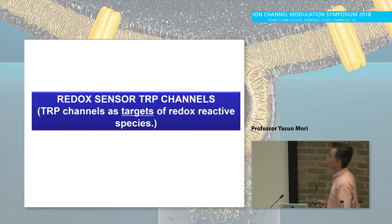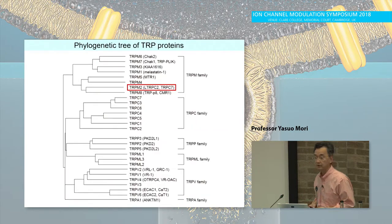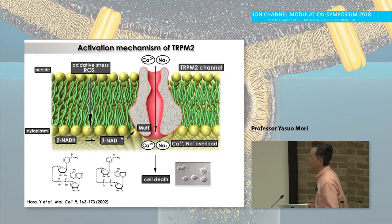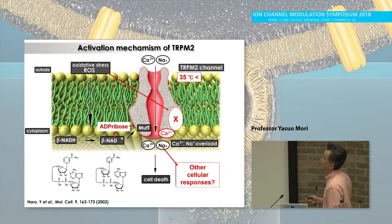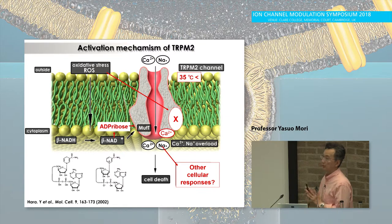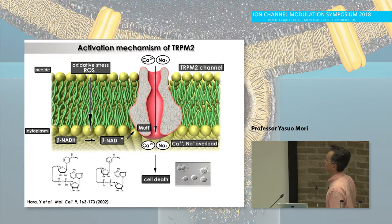How about redox sensitivity of TRP channels? Can TRP channels function as targets of redox-reactive species? The answer is yes. We are among the first to identify the true oxidation-sensitive TRP channel — the redox-sensitive channel — and that was TRPM2. This summarizes what we proposed in 2002, which received a lot of criticism. According to our own data, we had to revise this scheme quite significantly. We now think that stress and reactive oxygen species convert NADH into NAD+, and through multiple routes, NAD+ is converted into ADP ribose, which acts on a nudt9 motif to open up the channel. When calcium and sodium come in and are overloaded, it causes cell death, as indicated in the picture shown on the right side.